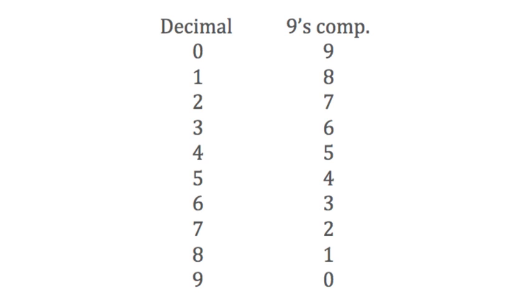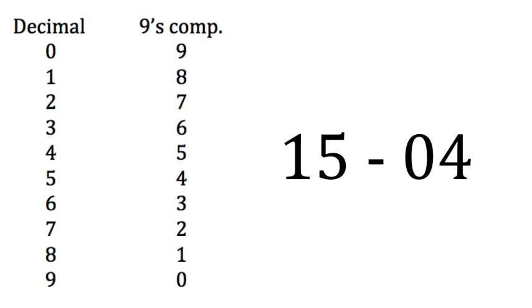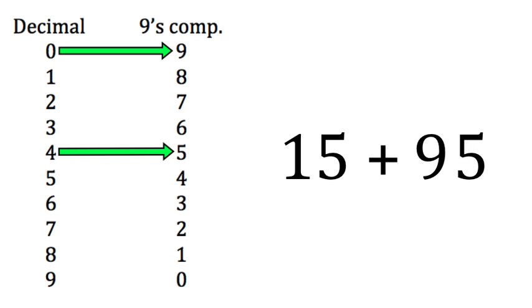This all comes from 9's complement. In tabular form, 9's complement looks like this. So when subtracting one number from another, say 15 minus 4, we first look in our table and replace all the negative decimal numbers with 9's complement representation.